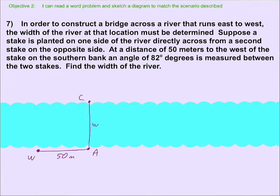So at a distance of 50 meters to the west of the stake on the southern bank, an angle of 82 degrees is measured between the two stakes. Now this is not drawn to scale very well because 82 degrees is quite big and it's hard to draw. Like my 50 meters would look very small. But that is an 82 degree angle.